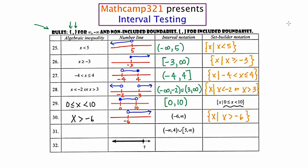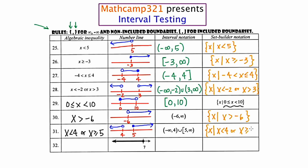Number 31: they give us two intervals. The critical values are 4 and 5. The first interval goes from negative infinity to 4, and the second piece goes from 5 — but it's closed this time — to infinity. Two separate lines means or. So this is going to be x is less than 4, or x is greater than or equal to 5. The set builder notation will just be: x such that x is less than 4, or x is greater than or equal to 5.